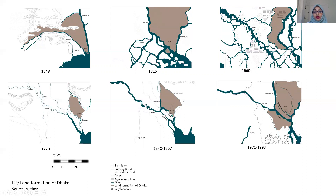The final confluence of the Ganges and Brahmaputra now happens to the northwest of Dhaka city, where they again meet the Meghna before finally falling into the Bay of Bengal. The present Dhaka situation developed around the Buriganga River, which is a distributary of the Dhaleshwari. So this part of the area has been greatly impacted by the larger-scale changes in the Ganges and Brahmaputra river system.